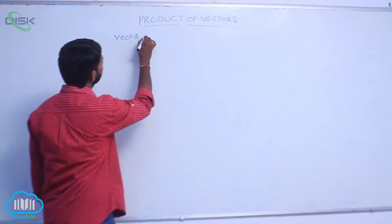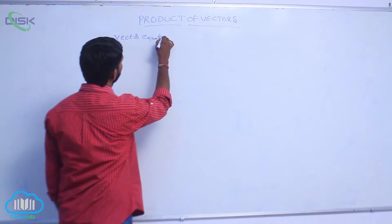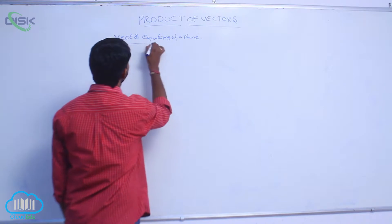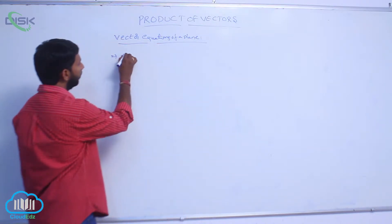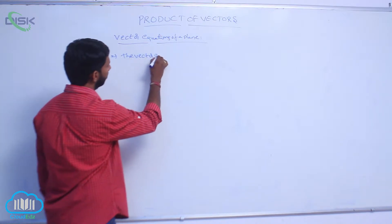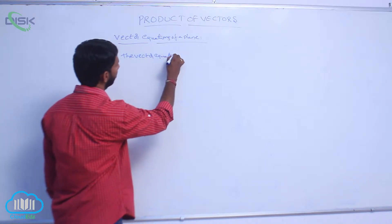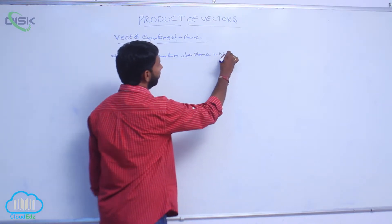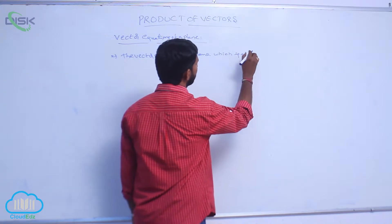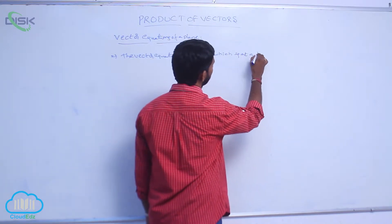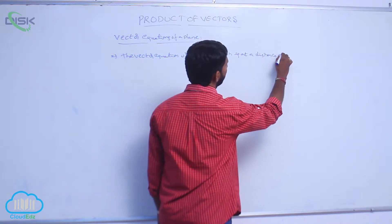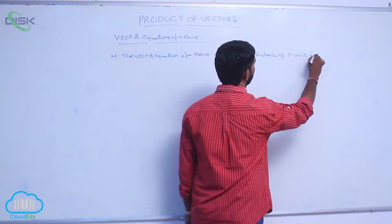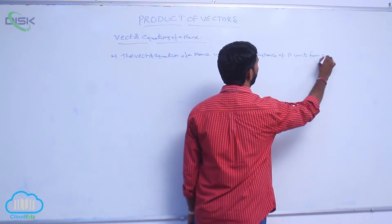Vector equations of a plane. The first one: the vector equation of a plane which is at a distance of p units from the origin.